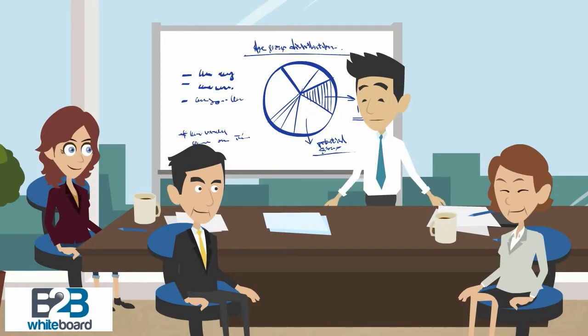A balance sheet is often presented alongside one for a different point in time, typically the previous year for comparison purposes. A standard company balance sheet has three parts: assets, liabilities, and ownership equity.